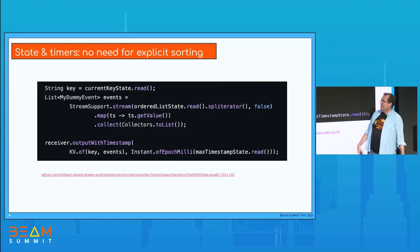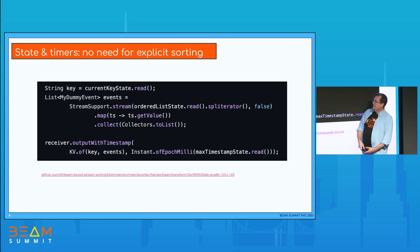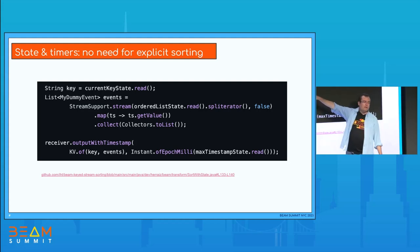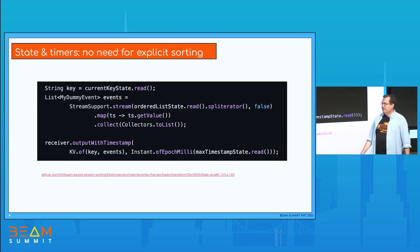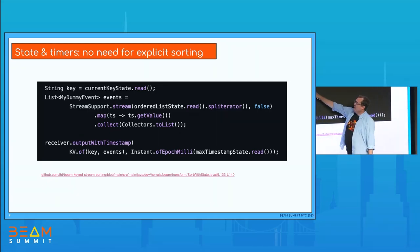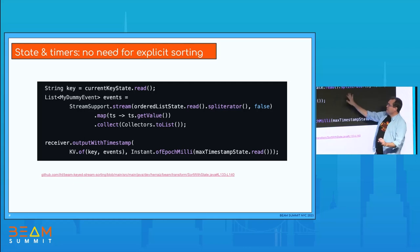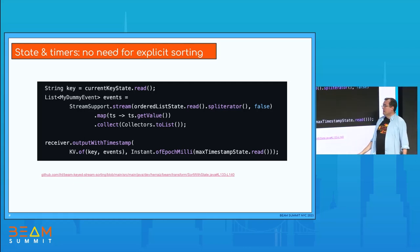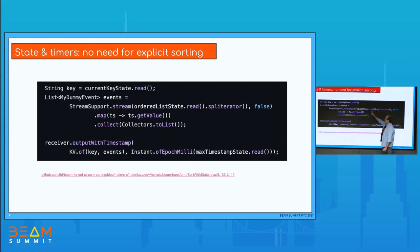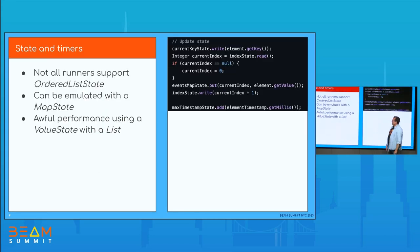When emitting the state, we read the ordered list state — there's no explicit sorting call in the code. The order list state is just read, and at that moment everything is sorted. We then emit the output. The downside is that not all runners support ordered list state. If needed, you could emulate it with map state or using value state with a list.